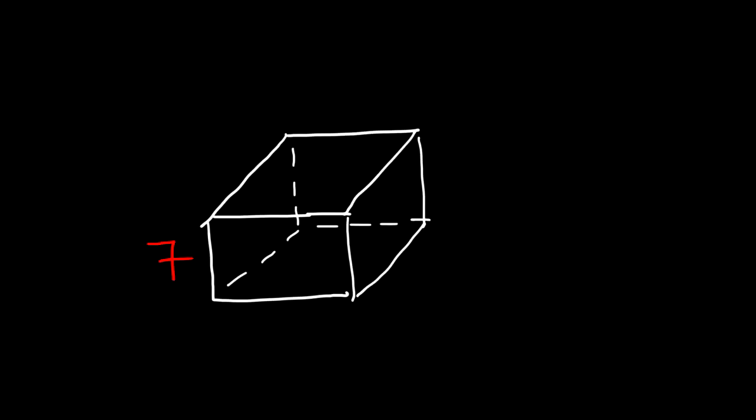Now we know that the volume of a rectangular prism is the length times the width times the height. However, for a cube, all sides are the same. So this is x, x, and x. So it turns out that the volume of a cube is just x cubed.